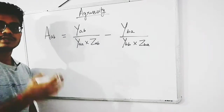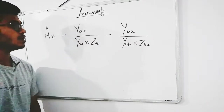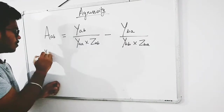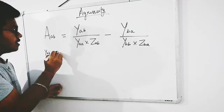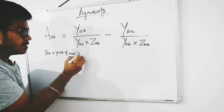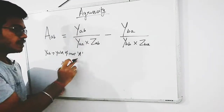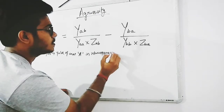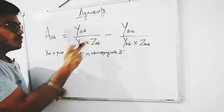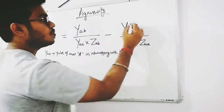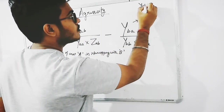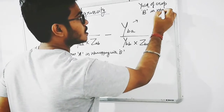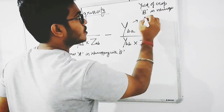This is the formula of aggressivity by which we can calculate the degree of competitiveness in the intercropping system between the crops. YAB refers to the yield of crop A in the intercropping system with crop B. YBA is the yield of crop B in the intercropping system with crop A.